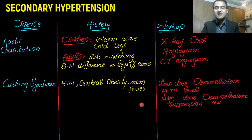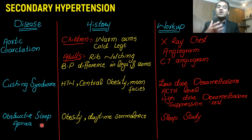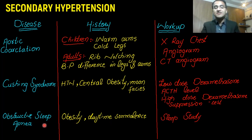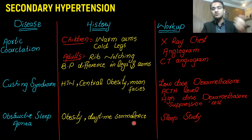Cushing syndrome is covered in detail in a separate video. Obstructive sleep apnea is difficulty breathing at night, which can be due to excessive fat in the neck or a large tongue that falls back onto the throat during sleep — often related to obesity. These patients have a history of daytime somnolence since they cannot sleep at night. A sleep study is needed for diagnosis. In obstructive sleep apnea, high sympathetic activity leads to hypertension.